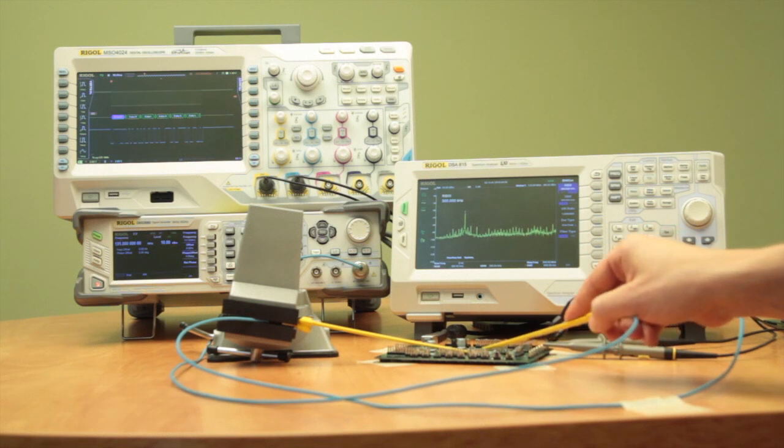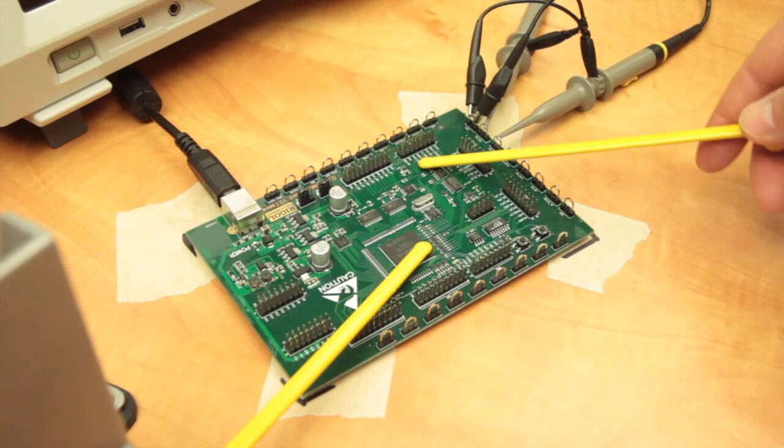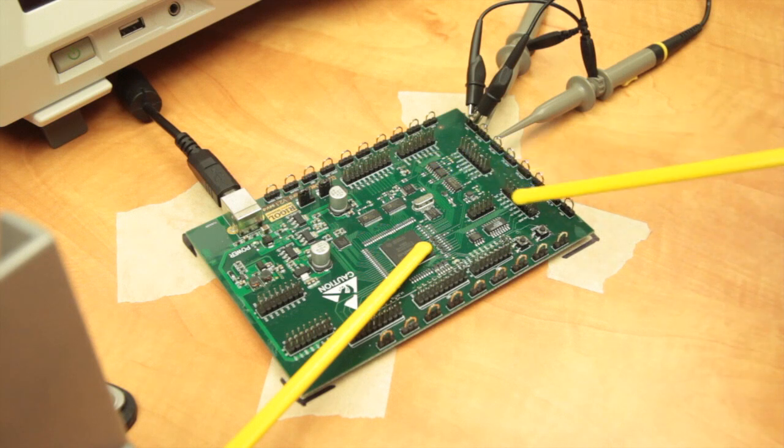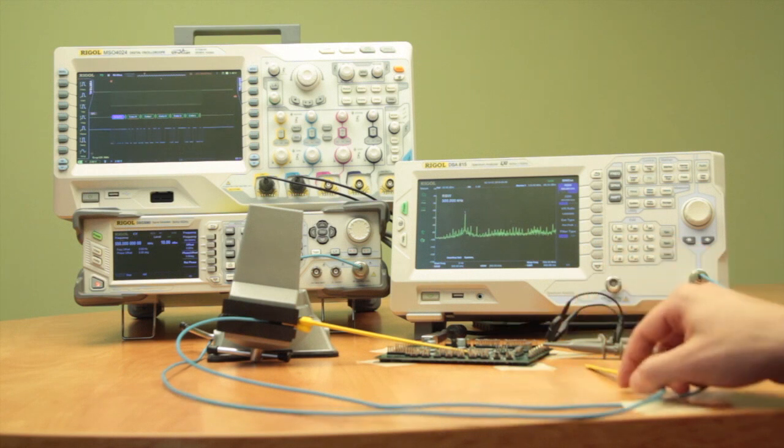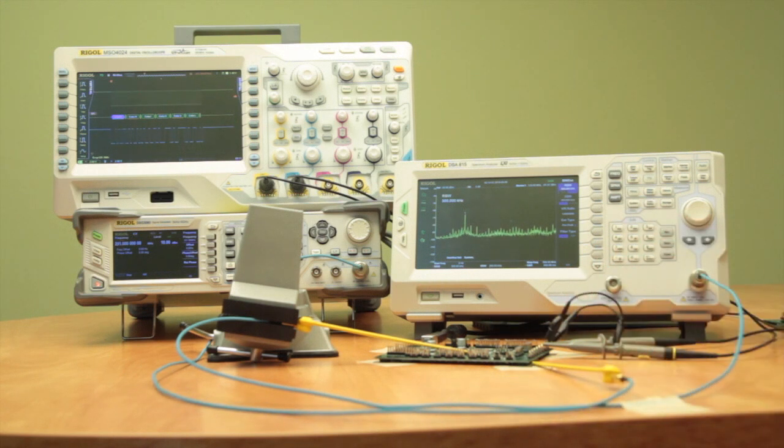But this is how we conduct an immunity test. We look at different areas of the board. We see how both the operation of the board and the emissions coming off the board are affected by radiation from a short range.